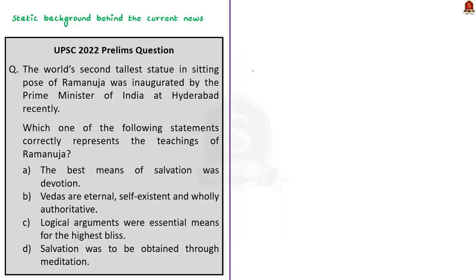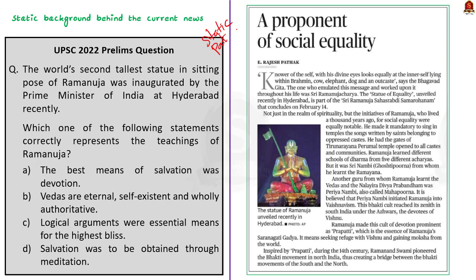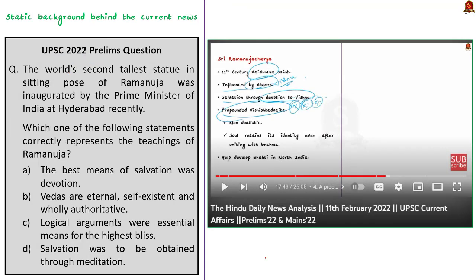For static background behind current news, every time a piece of news appears you must brush up the static part related to it. For example, when we covered the news about the Ramanuja statue in Hyderabad on 11th February 2022, we covered everything about Ramanuja. Our discussion even had the words 'salvation through devotion,' which is the answer for a 2022 prelims question. You only have to be regular, take proper notes, and revise constantly.